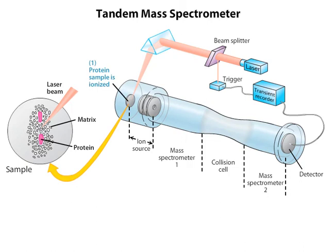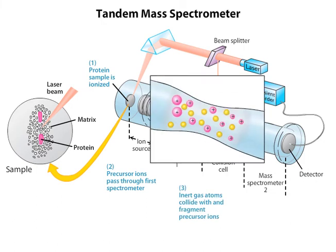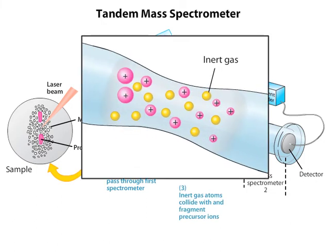With tandem mass spectrometry, these initial gaseous protein ions are called precursor ions. Applying an electrostatic field accelerates the precursor ions through the first mass spectrometer. After the precursor ions have been analyzed by the first mass spectrometer, they enter a collision cell, which contains an inert gas such as helium or argon.